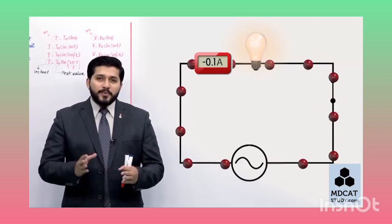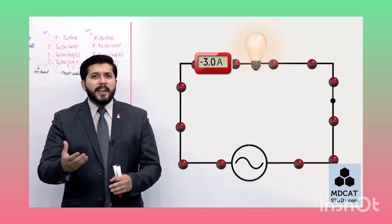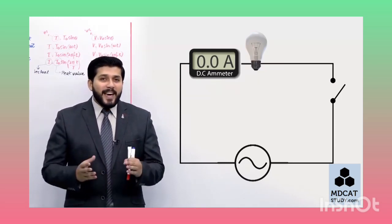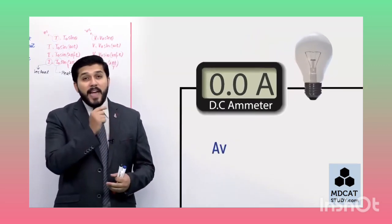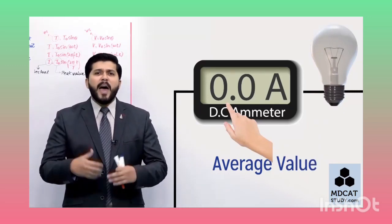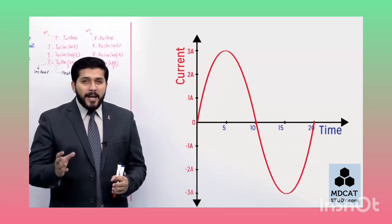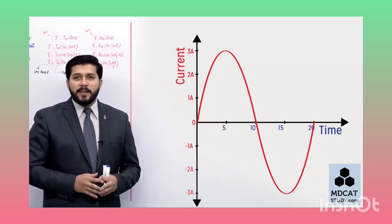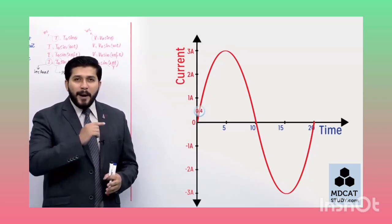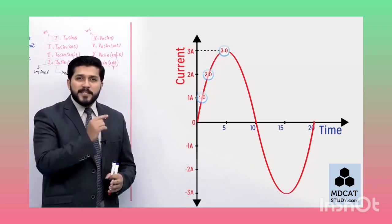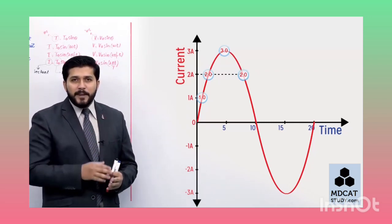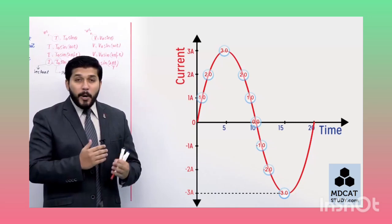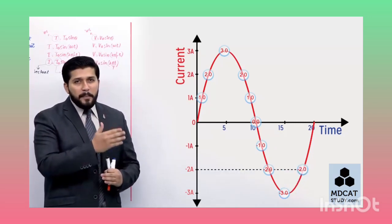اب ایک عام DC meter جو direct current measure کرتا ہے اسے AC circuit میں لگا دیتے ہیں۔ یہ DC meter کیا measure کرتا ہے؟ یہ average value of current measure کرتا ہے - یعنی ایک specific time period میں کتنا average current pass ہوا۔ AC cycle میں different points پر current: zero، plus 1، plus 2، plus 3، پھر واپس plus 2، plus 1، zero، پھر direction reverse ہونے پر minus 1، minus 2، minus 3، پھر minus 2، minus 1، zero۔